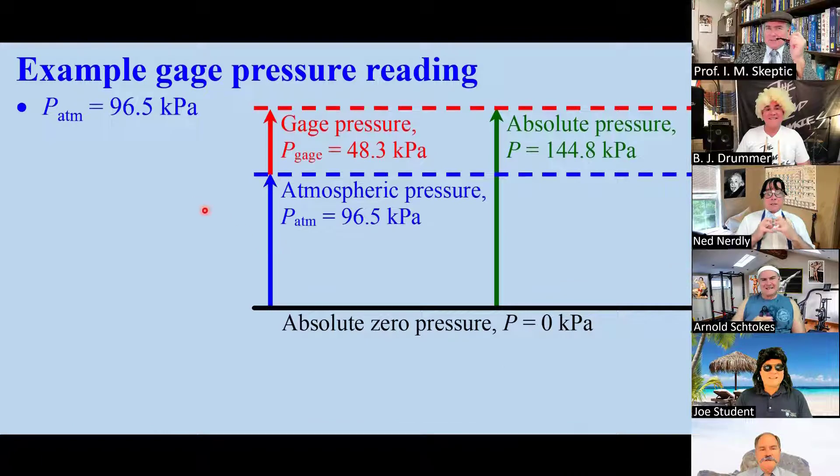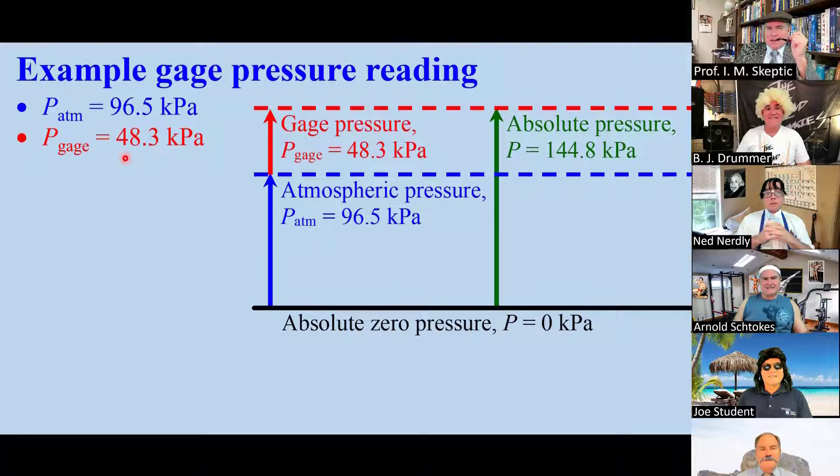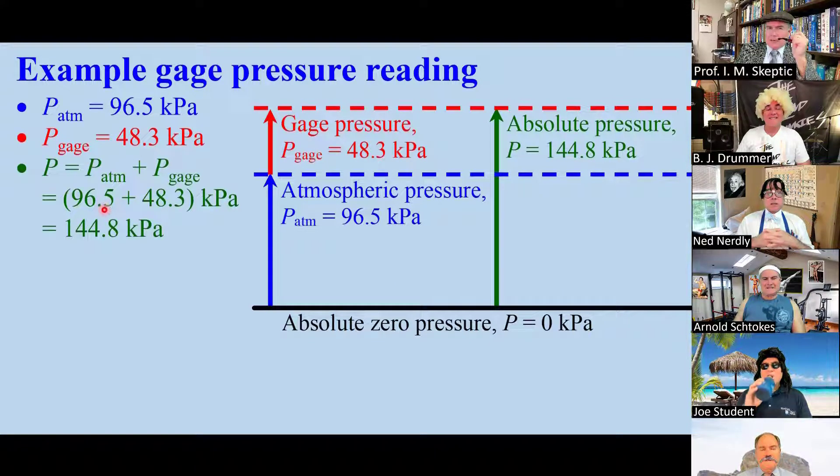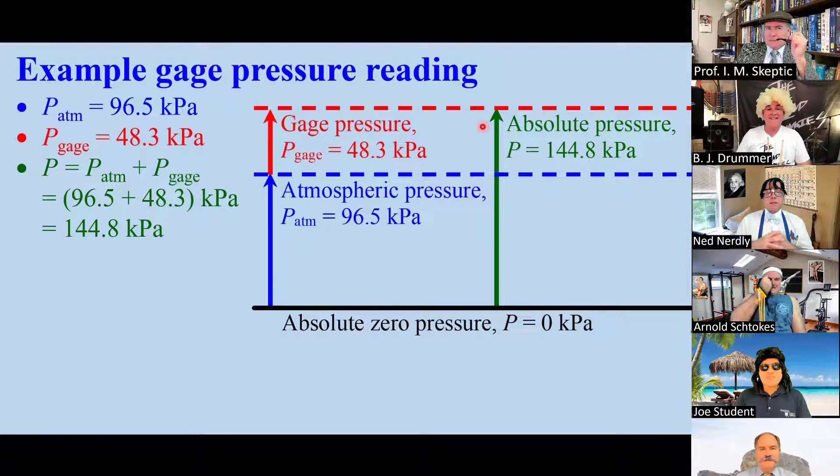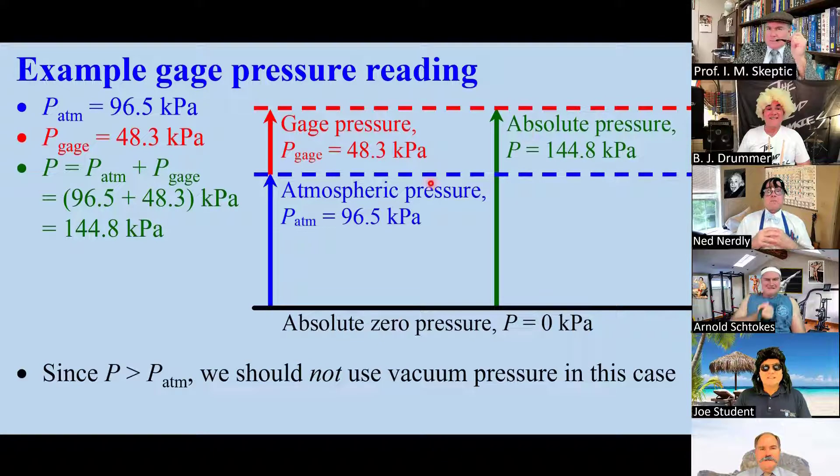Here's a diagram to help you understand it better. Suppose atmospheric pressure is 96.5 kPa, and we have a gauge pressure reading of 48.3 kPa. We add the two to get the absolute pressure, 144.8. Here we see atmospheric pressure, gauge pressure, and the sum which is absolute pressure. Since P is greater than P-atmosphere, we should not use vacuum pressure.